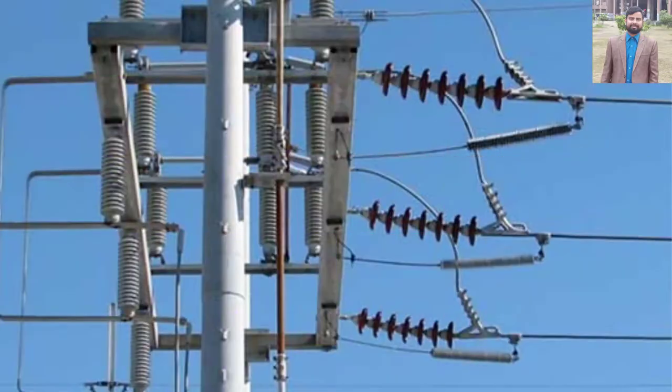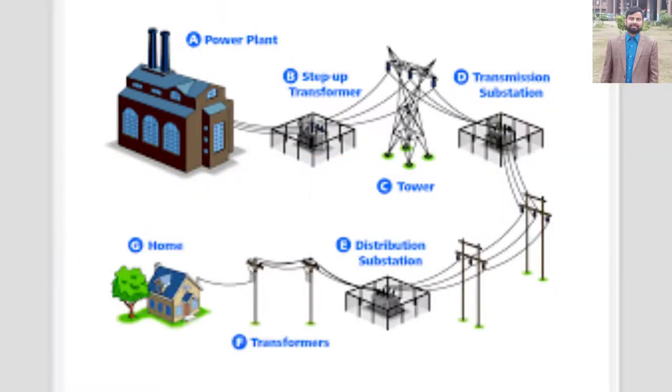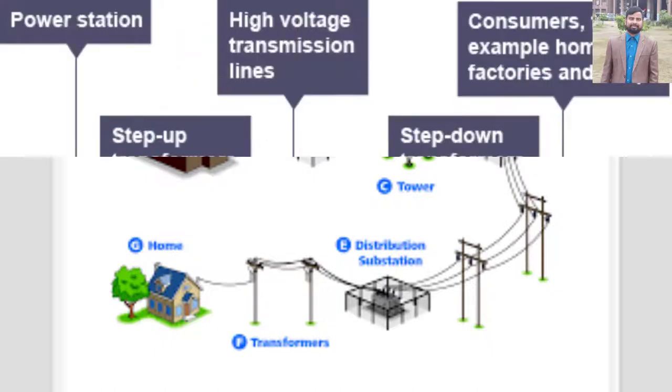The mighty power lines that crisscross our countryside or wiggle unseen beneath city streets carry electricity at enormously high voltages from power plants to our homes. It's not unusual for a power line to be rated at 400,000 to 750,000 volts.